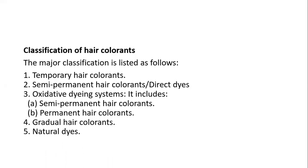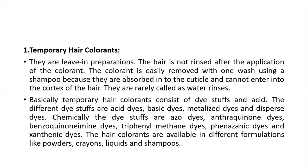Hair colorants are categorized as: temporary hair colorants, semi-permanent hair colorants (also called direct dyes), oxidative dyeing systems (which include semi-permanent and permanent hair colorants), gradual hair colorants, and natural colors or natural dyes.